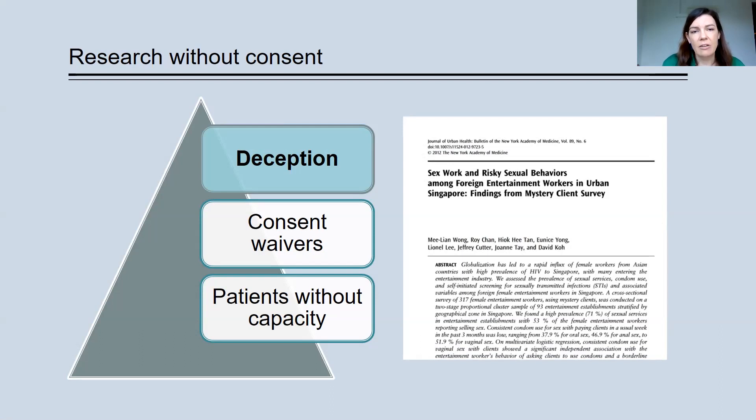at least in collaboration to some degree with community workers, really with the idea around how they could design the research in a way that had the least potential to harm sex workers. And so it was designed in part in conjunction with community representatives. This is a good example because this was approved by an IRB in Singapore, but certainly in other jurisdictions, this degree of deception might not be considered permissible.